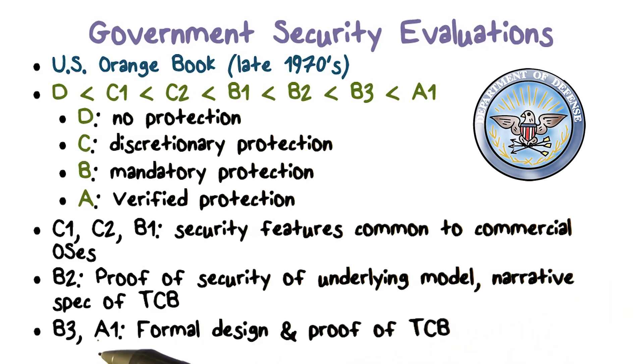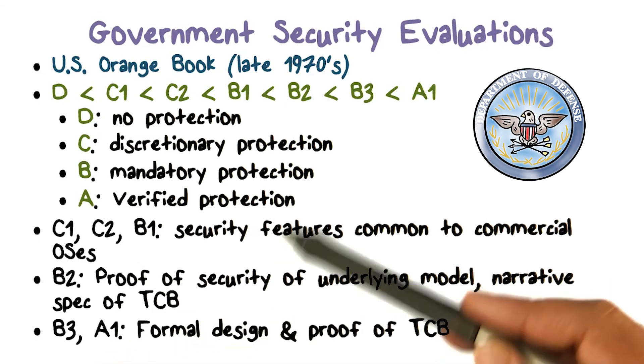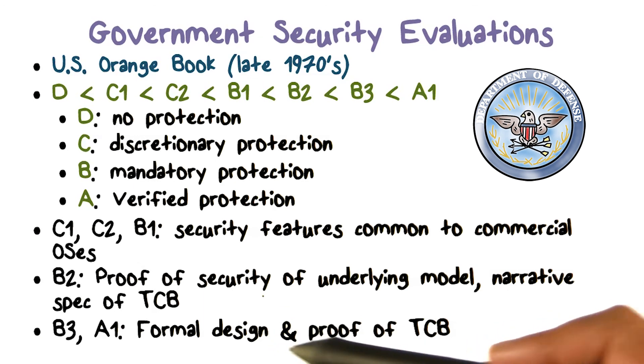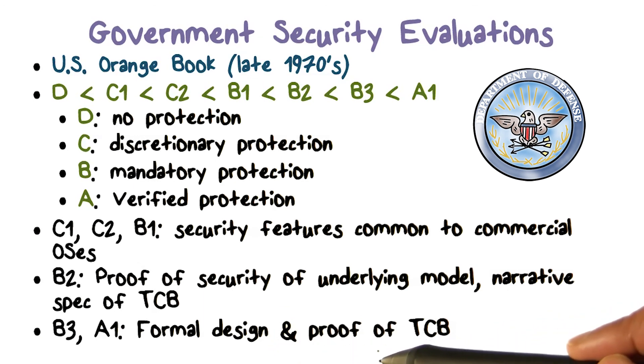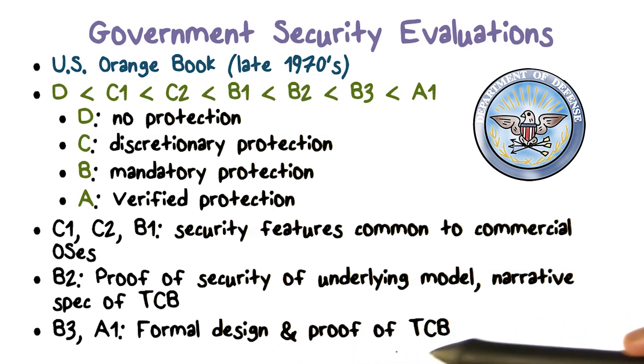If you want to move up to B3 or A1, that requires formal verification — demonstrating that the TCB is implemented correctly and things like that.